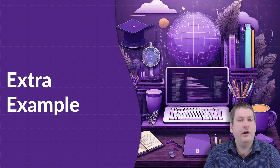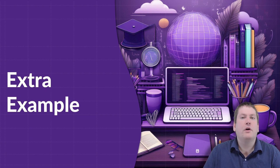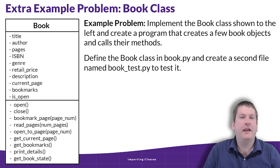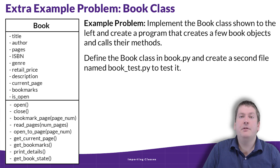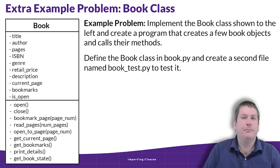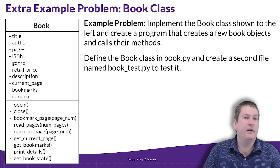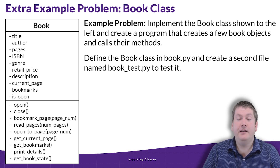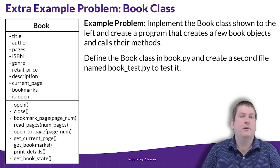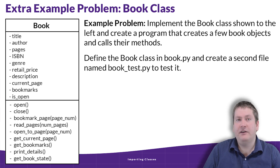For the rest of this video, we're going to look at a more lengthy and complex example. If you're already good with OOP, you could skip this, but if you'd like more experience with a complex example, follow along. The goal is to implement a Book class. The problem states: implement the Book class shown, create a program that creates a few book objects and calls their methods, define the Book class in book.py, and create a second file named book_test.py to test it. Feel free to pause and try it yourself first.